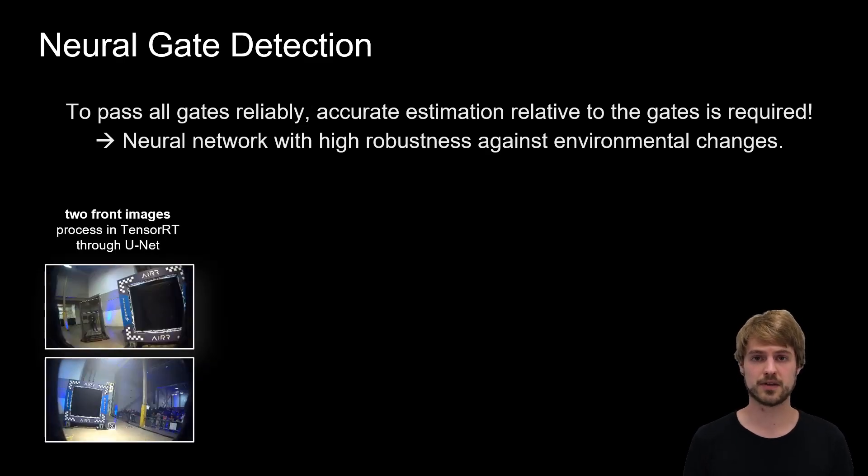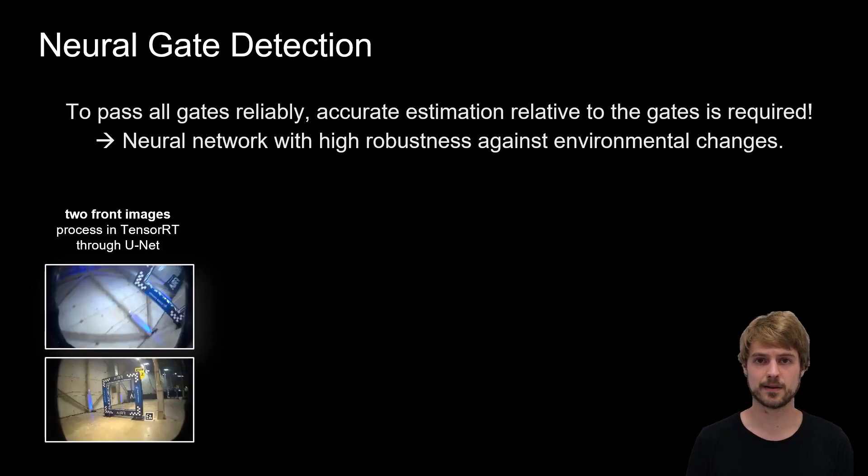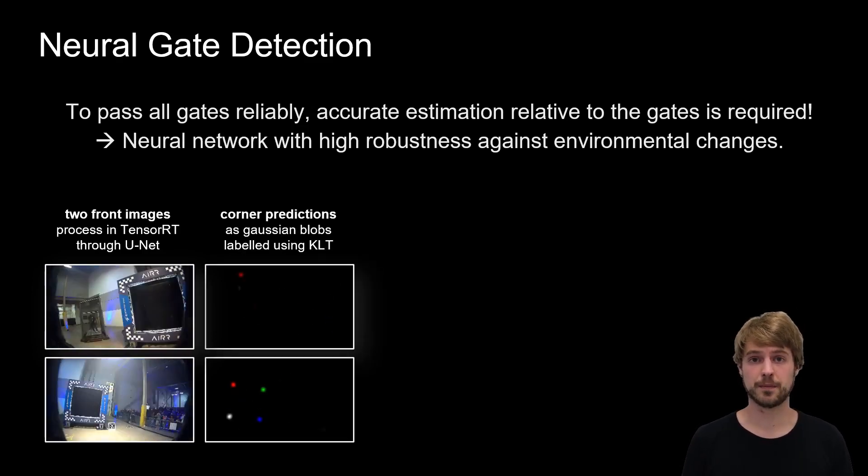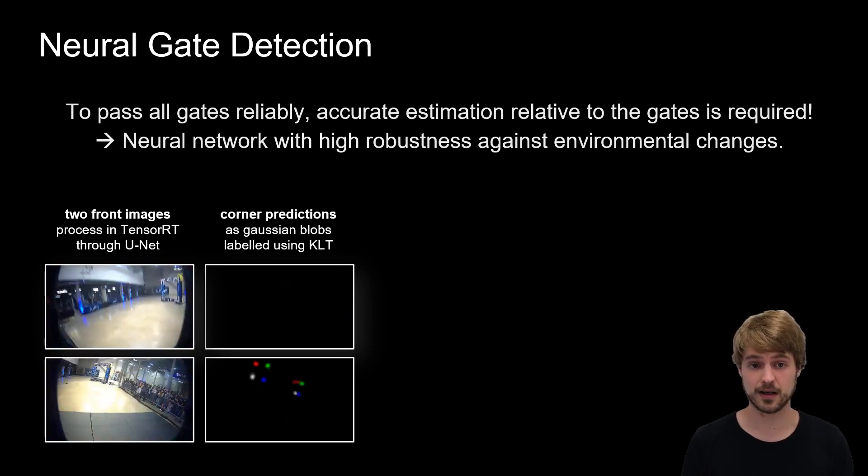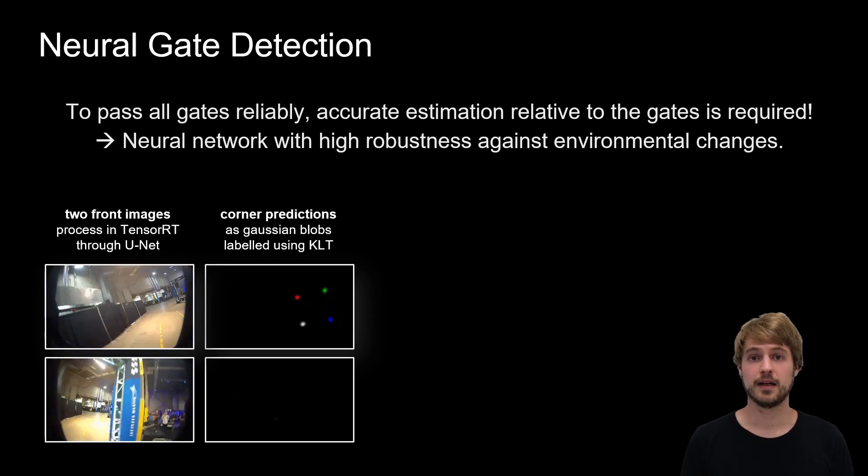We feed the two camera streams through a UNet architecture accelerated by TensorRT. This provides us with gate corner predictions that we initially labeled using KLT corner tracking.